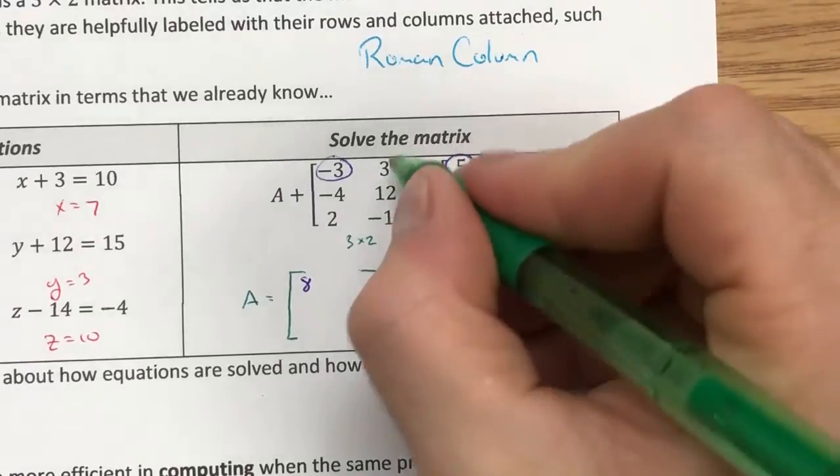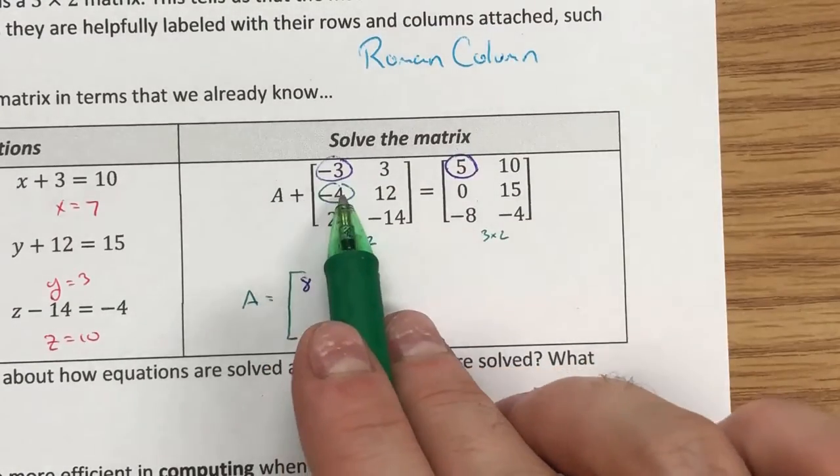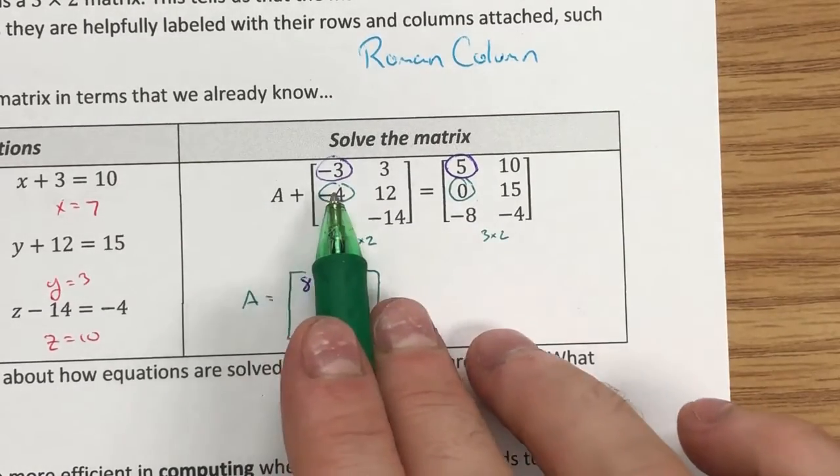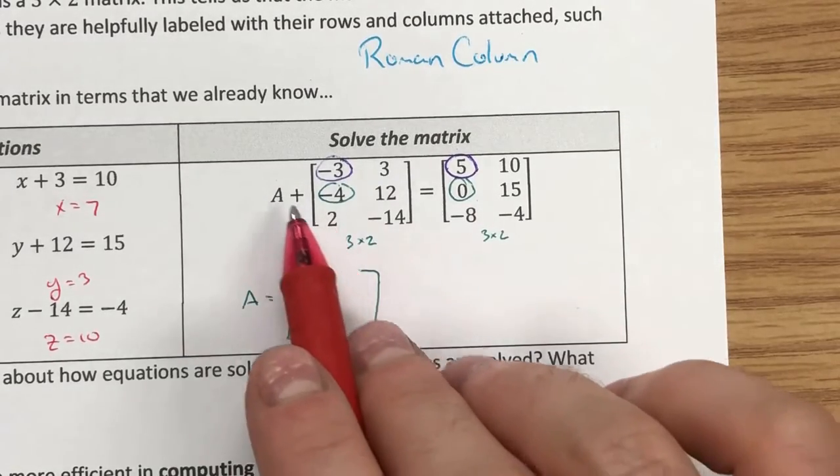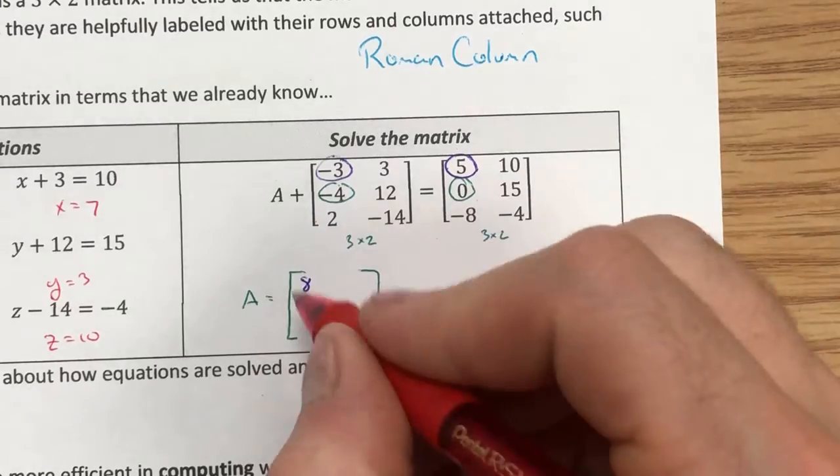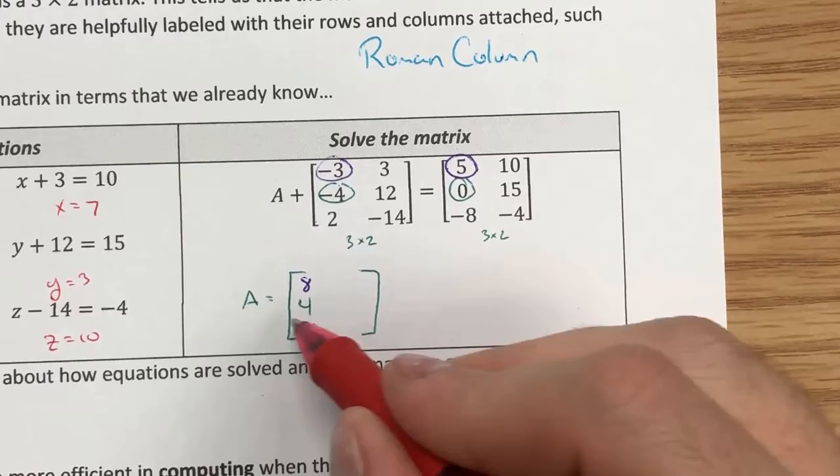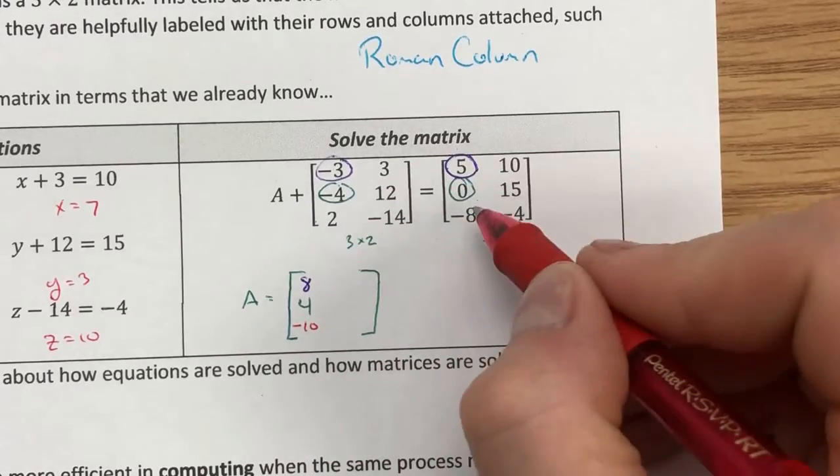I'd look at the next part and say, what plus a negative 4 is equal to 0? So I could say, what minus 4 is equal to 0? How about a 4? I could say something like, how about what plus 2 is equal to negative 8? I could say negative 10. And I could work my way through this entire matrix looking at it piece by piece by piece by piece.